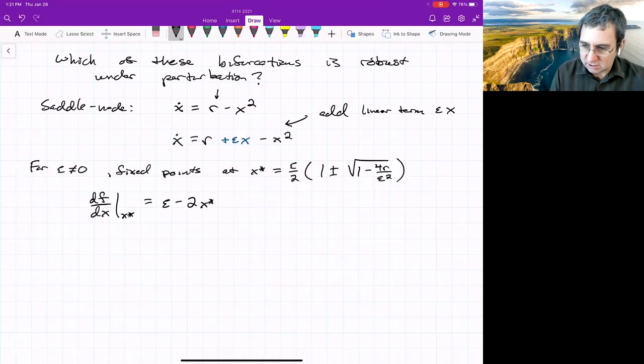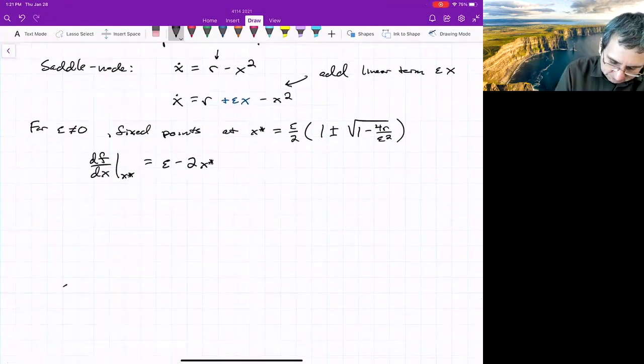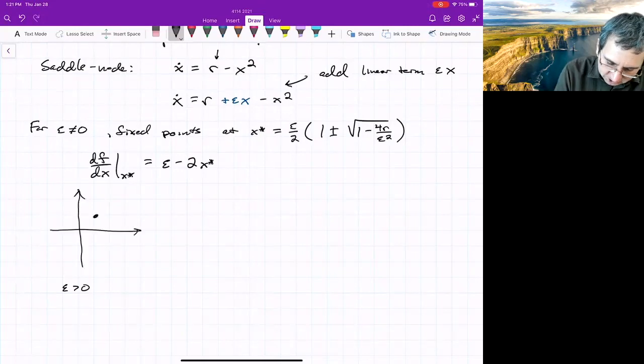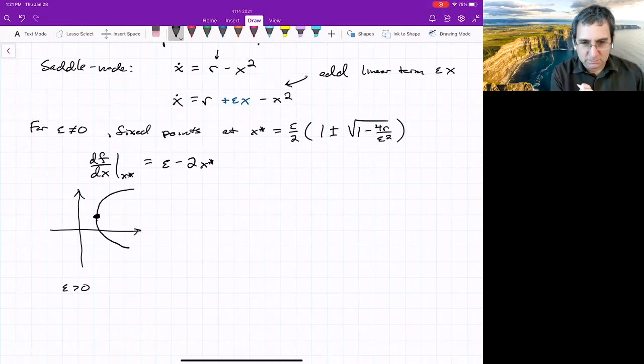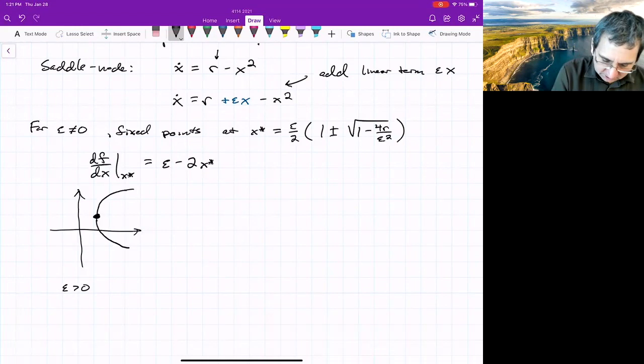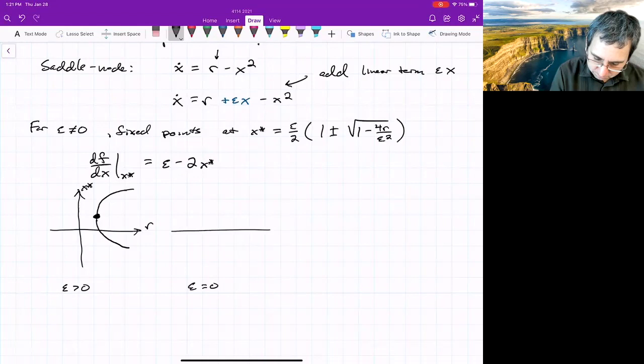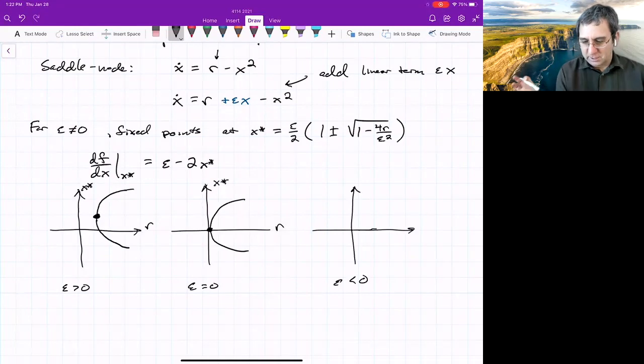We could plot different cases. We'll plot first epsilon greater than zero, and it just sort of moves where the saddle node happens. It doesn't happen at zero anymore. It happens a little bit off of zero. What am I plotting here? X star versus r. How about epsilon equals zero? Well, epsilon equals zero is the one we've already seen. Epsilon less than zero, instead of the parabola being above the r axis, it'll be below the r axis. The saddle node bifurcation survives. It just moves a little.